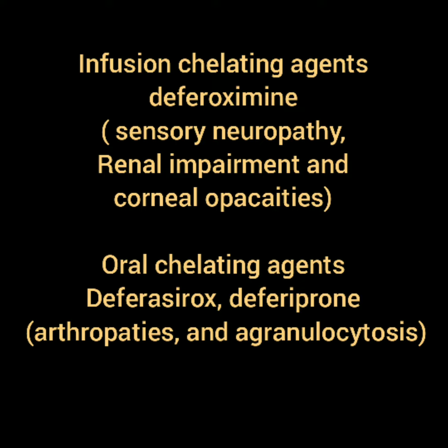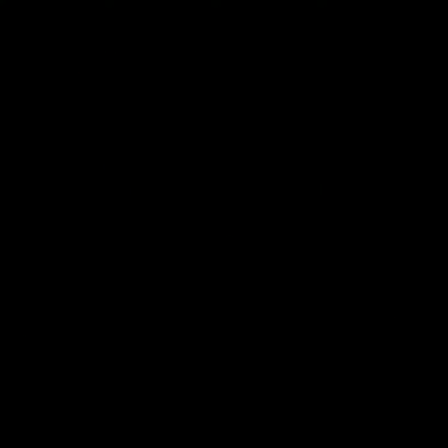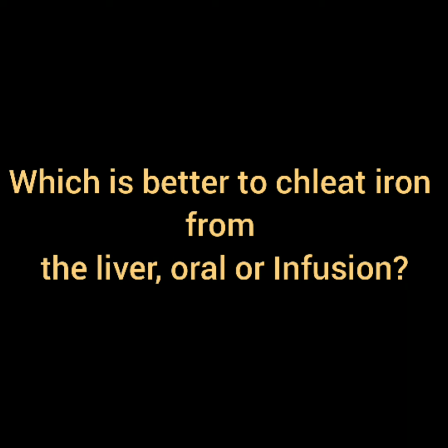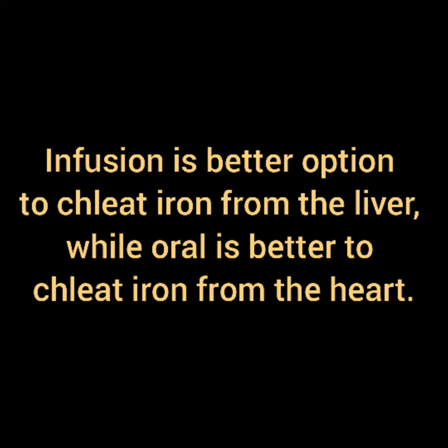Another question: which is better to chelate iron from the liver — oral or infusion? Infusion is the better option to chelate iron from the liver, while oral is better to chelate iron from the heart. So if the thalassemic patient develops hemochromatosis and consequently cirrhosis, the better option is infusion; if the patient develops cardiomyopathy secondary to hemochromatosis, the better option is oral.